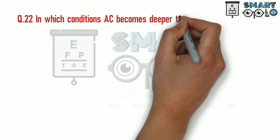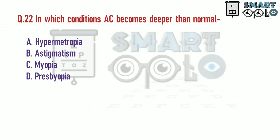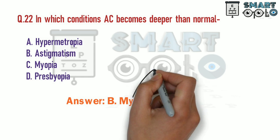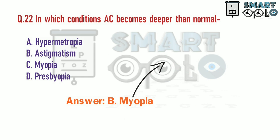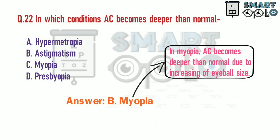Q22. In which condition does the anterior chamber become deeper than normal? A. Hypermetropia. B. Astigmatism. C. Myopia. D. Presbyopia. In myopia, the anterior chamber becomes deeper than normal due to an increase in the eyeball size.